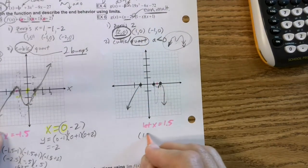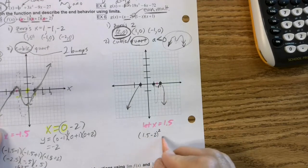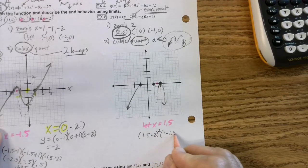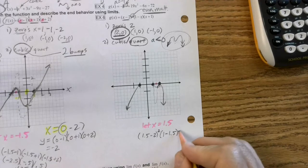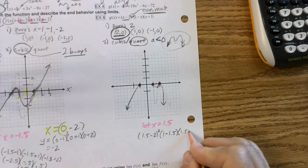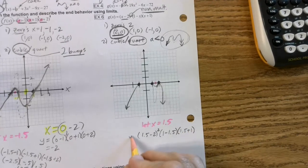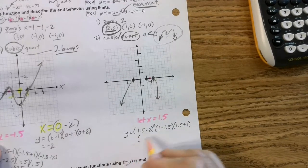So we're going to go back up here. We're going to say, all right, 1.5 minus 2 squared, and then 1 minus 1.5, and then we're going to go 1.5 plus 1. Remember, this equals y.